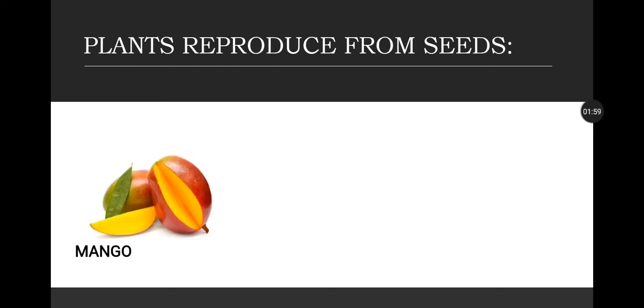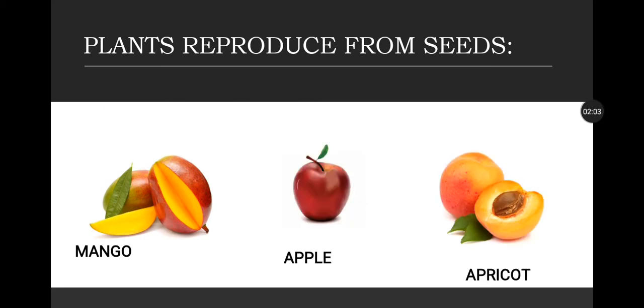Take a look at this example: mango, apple, and apricot. These three fruits have seeds enclosed in them through which they will reproduce.